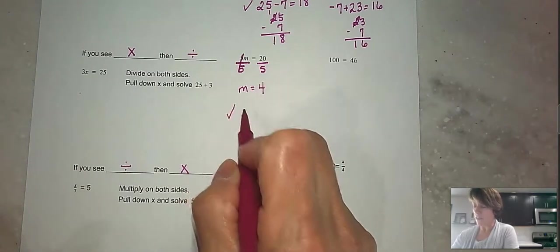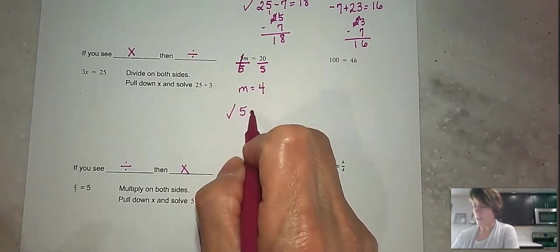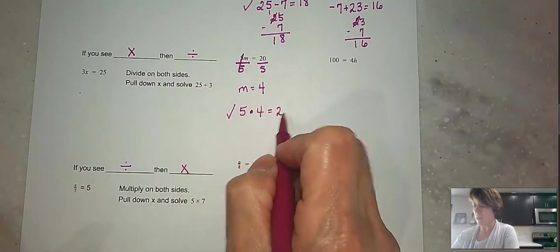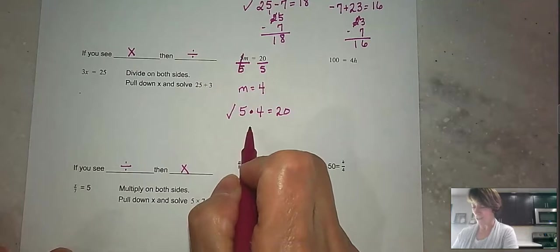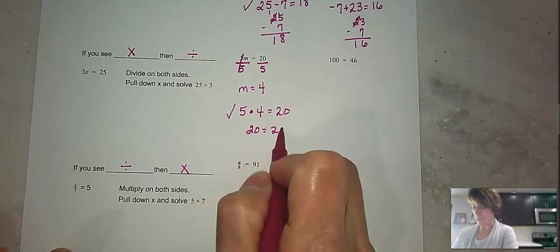And again, we're going to go ahead and check this. Is 5 times 4 equal to 20? And because we know our multiplication tables, we know that that is true. 20 is equal to 20.